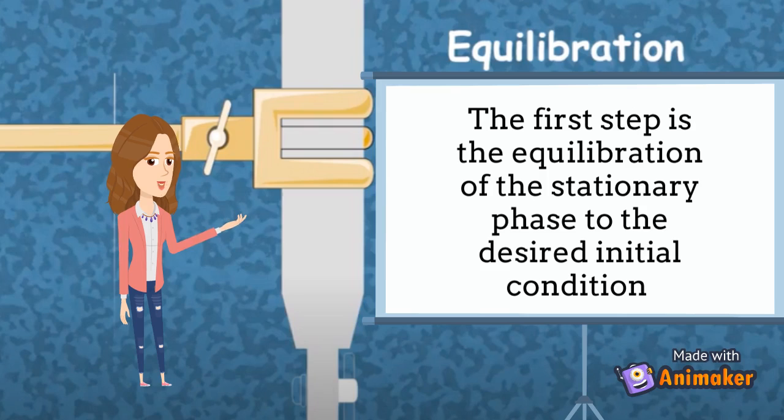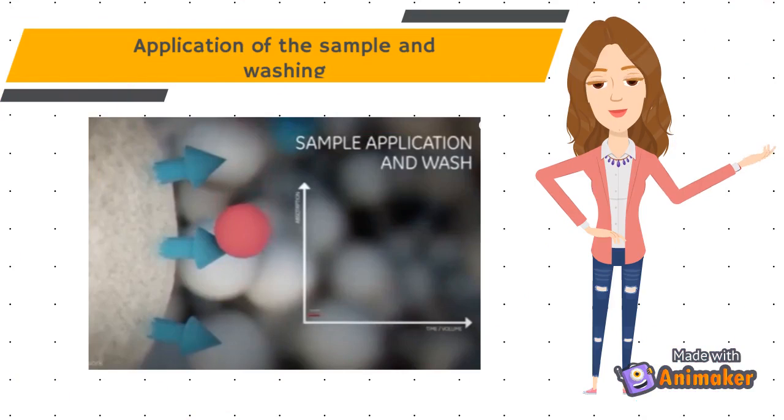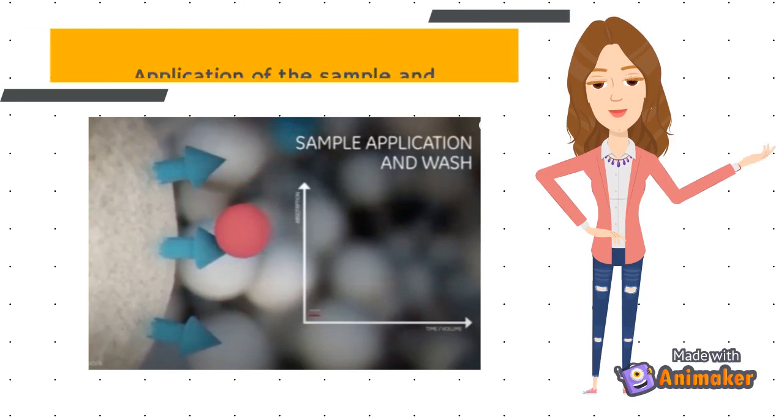The first step is the calibration of the stationary phase to the desired initial condition. The second step is the application of the sample and washing. The goal of this step is to bind desired molecule and wash off any material that has not been absorbed.